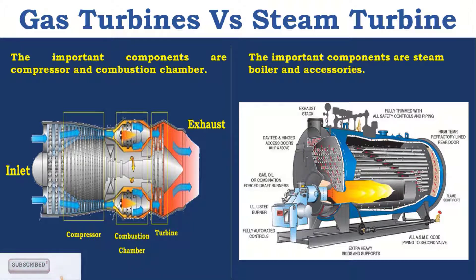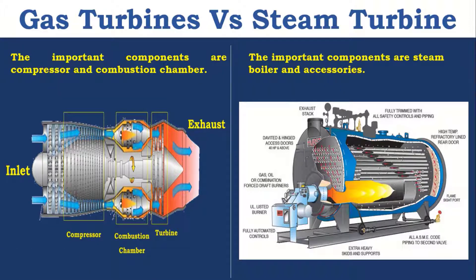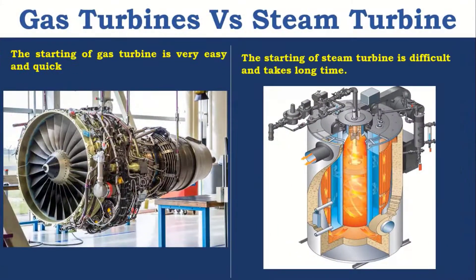The important components are Compressor and Combustion Chamber in Gas Turbine, other than the Turbine, whereas the important components in Steam Turbine are Steam Boiler and Pump, along with other accessories. The starting of Gas Turbine is very easy, because the Compressor runs initially using backup power such as a battery, whereas the starting of Steam Turbine is difficult and takes a long time, because of the Boiler.